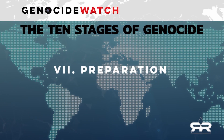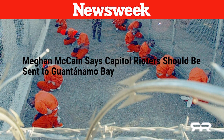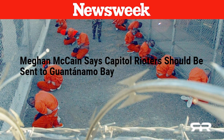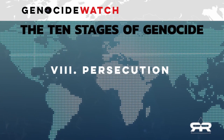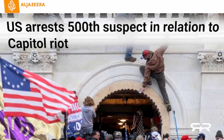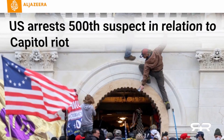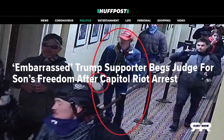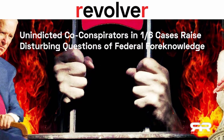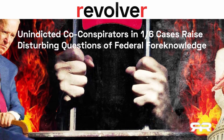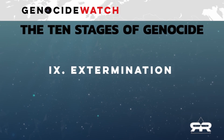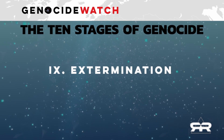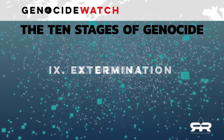Stage seven is preparation, when plans are made for the relocation, arrest, or extermination of the targeted group, which is most likely already happening. Stage eight is persecution, when the targeted group begins getting arrested and separated from society. There are already hundreds of innocent patriotic Americans imprisoned indefinitely for protesting the stolen election of 2020. Stage nine is extermination, when the mass killing begins. And stage ten is denial.